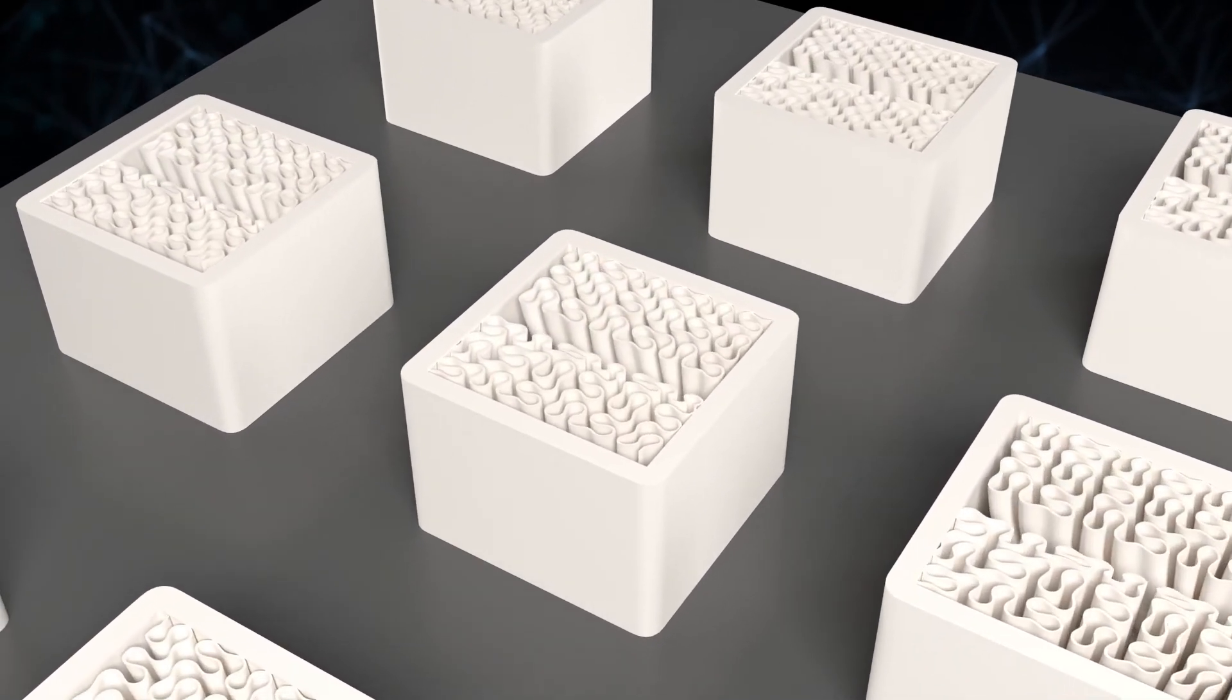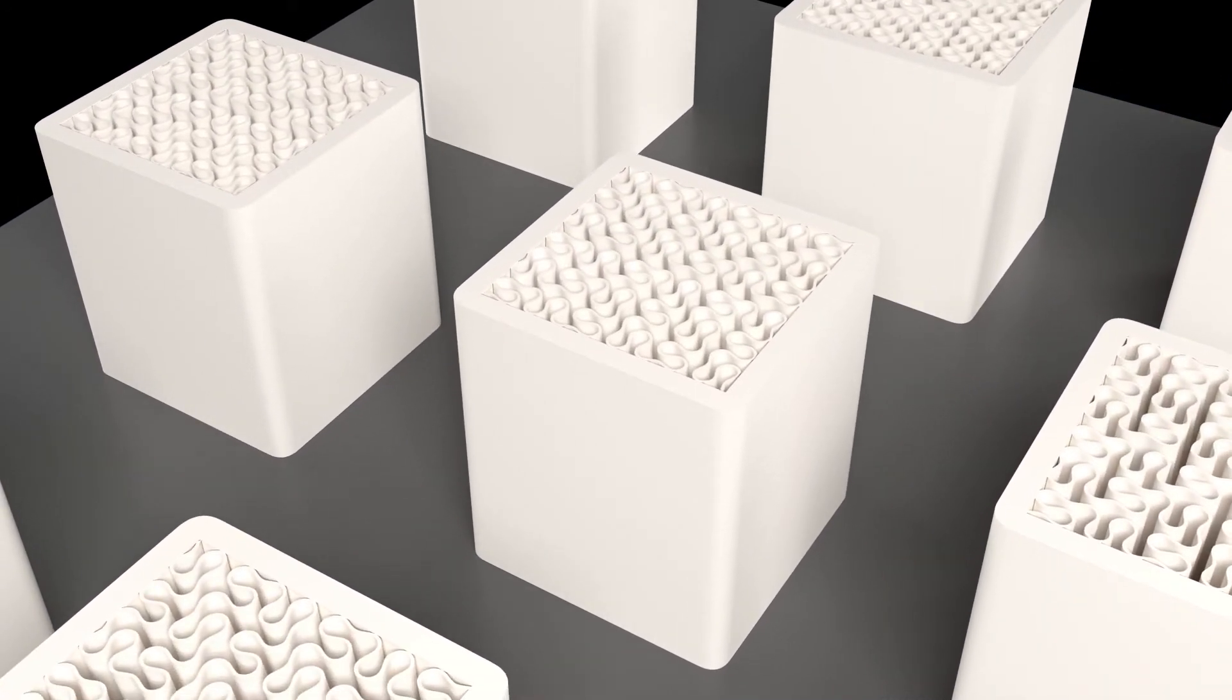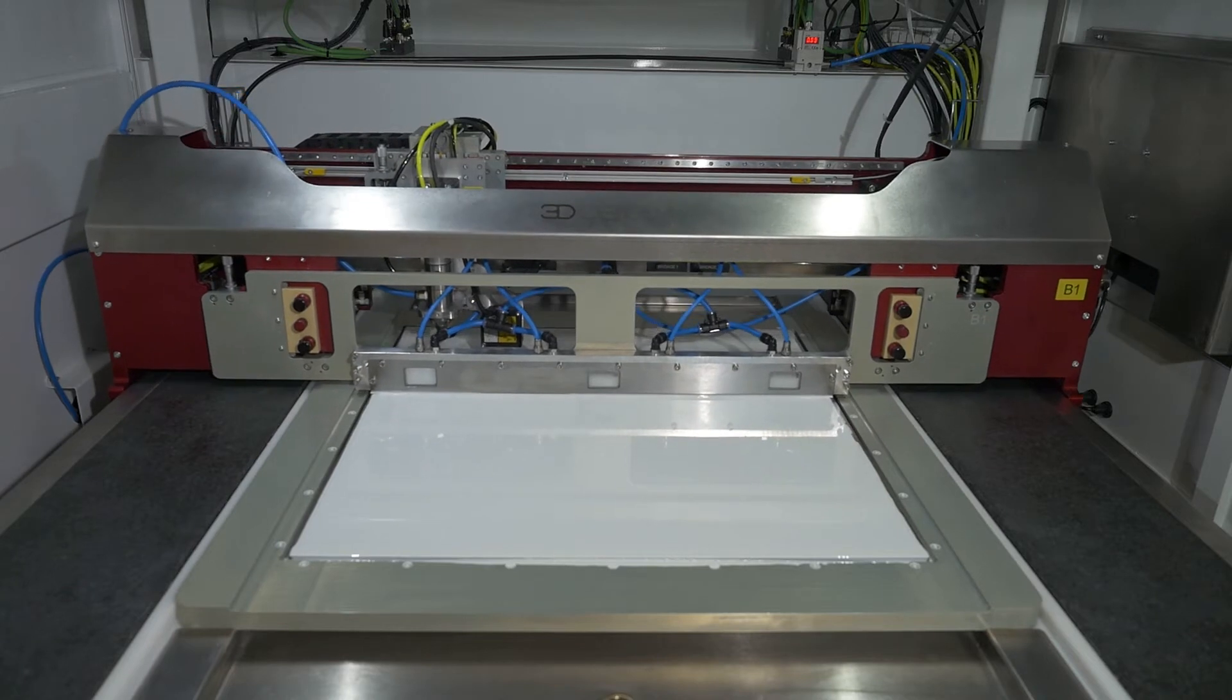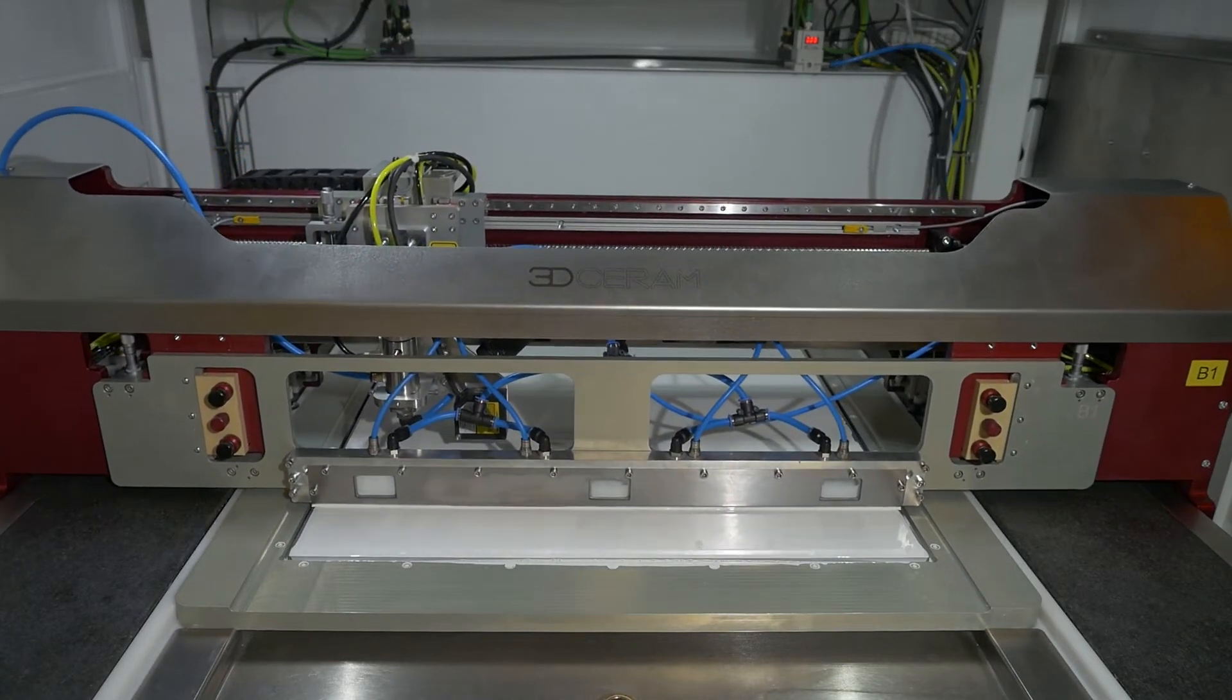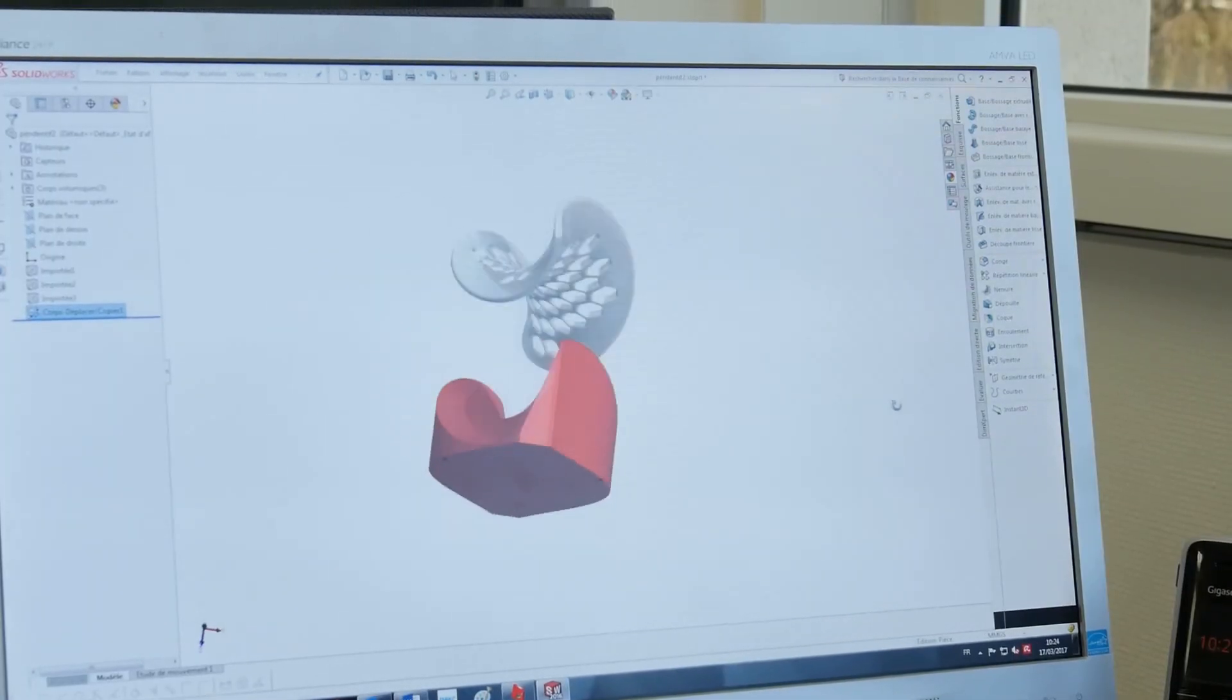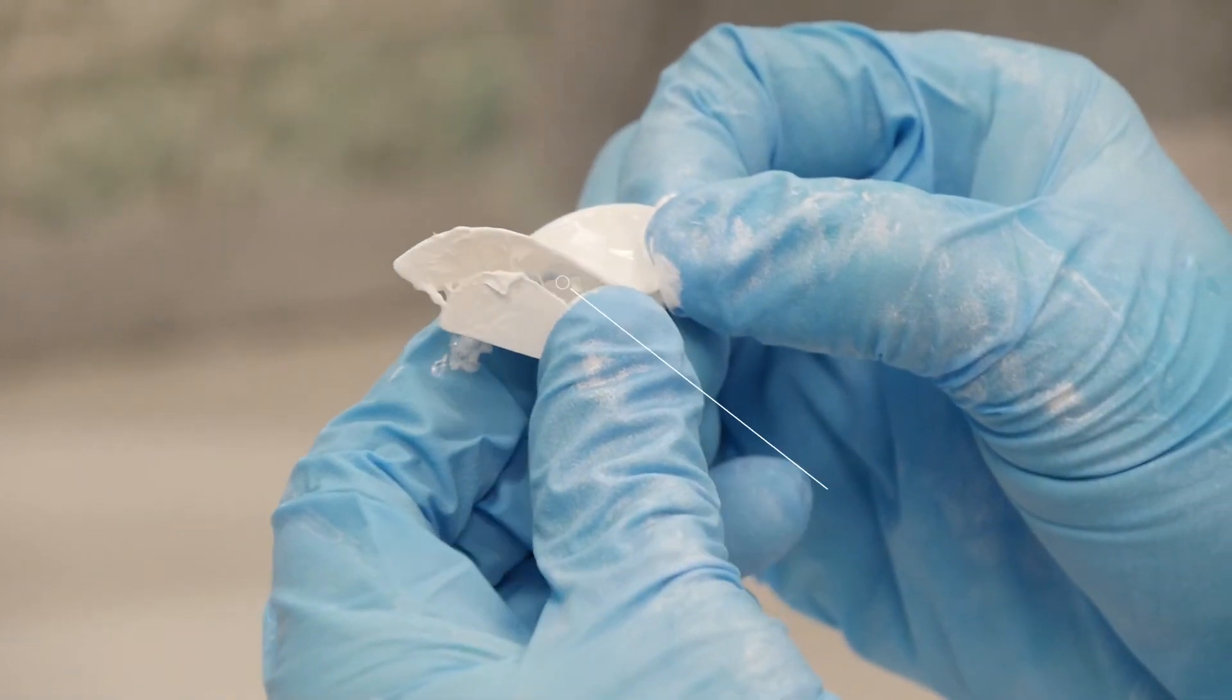After the printing process, the unpolymerized paste is reusable after filtering. Top-down technology enables the construction of parts without mechanically attached supports, exclusive to 3D Ceram.